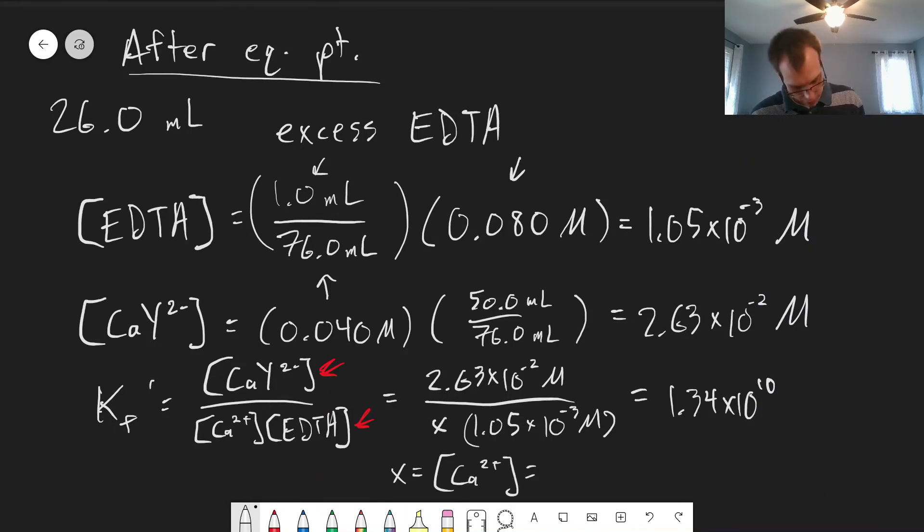We get calcium of 1.9 times 10 to the minus 9, meaning pCa is 8.73. So we see again a further decrease in the concentration of calcium ion in solution.